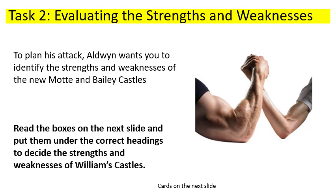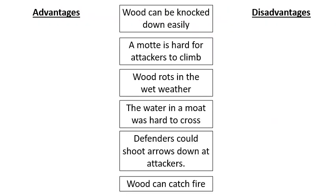Your next task is to evaluate the strengths and weaknesses of this castle. Aldwin wants you to do all the work here - he's going to sit back but hopefully take the castle in the end. To plan his attack, he wants you to identify the strengths and weaknesses. On the next slide there are some boxes - read them and put them under one of two headings: whether it is a strength or a weakness of that castle. You've got six different things to read through. Create a simple table on your paper for advantages and disadvantages, and write them in. Pause here, then press play when you're ready.